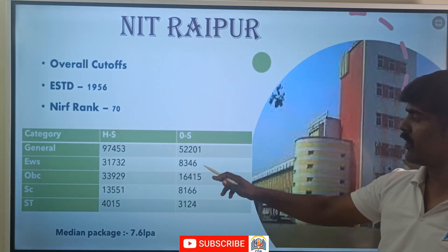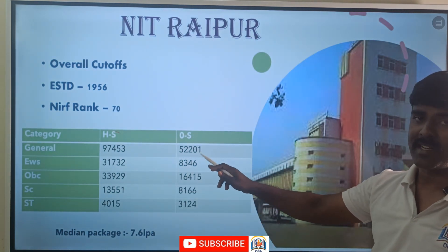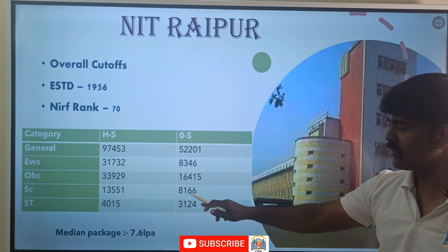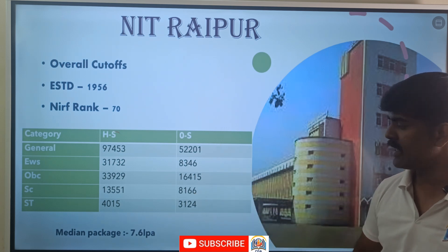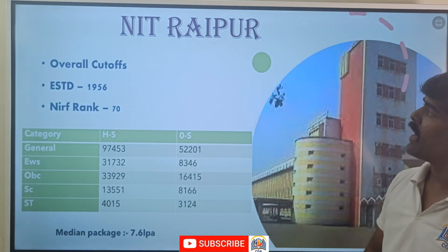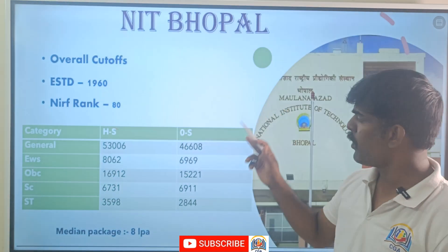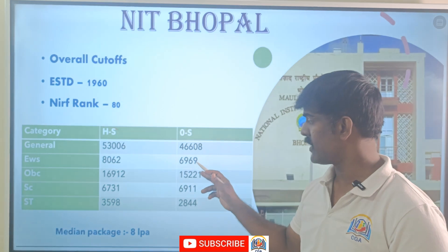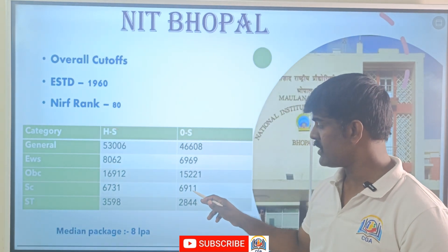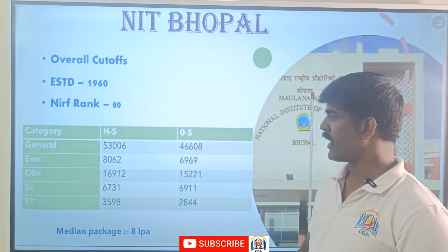NIT Raipur — general 52,000 plus (crossing 50,000 in general); EWS 8,000; OBC 16,000; SC 8,000; ST 3,000. Median package 7.6 lakh. NIT Bhopal — general around 46,000; EWS 6,900; OBC 15,000; SC 6,900; ST 2,008. Median package 8 lakh.